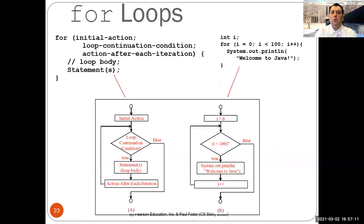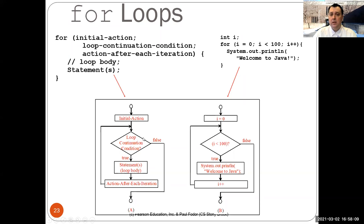The third and most common kind of loops in Java are for loops. A for loop has the syntax: for(initial action; loop continuation condition; action after each iteration) followed by a block or single statement. The initial action executes only once. Then the loop continuation condition is evaluated — if true, it executes the loop body, then the action after each iteration, then checks the condition again. This repeats until the condition becomes false. If false from the beginning, the body never executes.